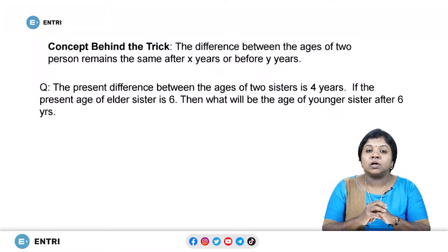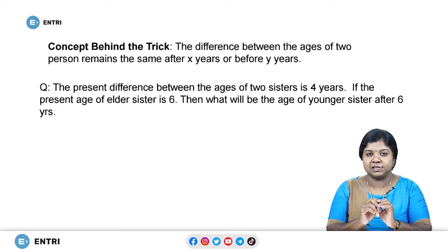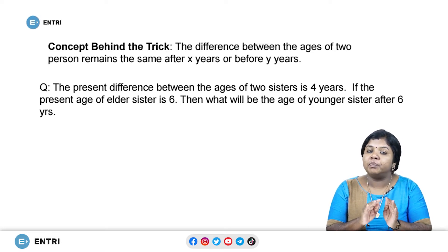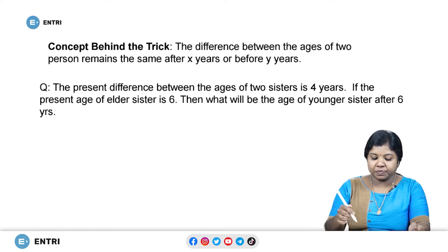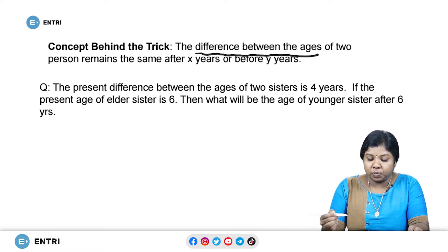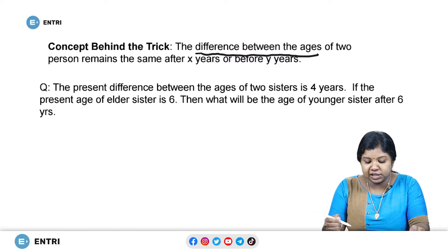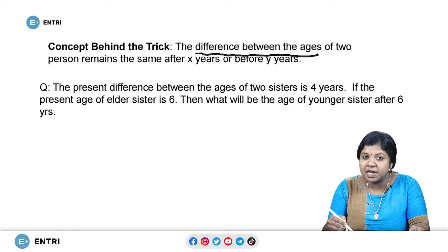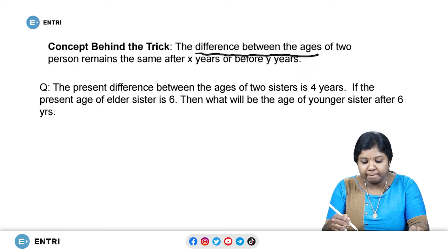Let us begin with the concept on which the short trick works. The difference of the ages between two persons remains the same after or before a period of time. What we need to concentrate on is the difference between the ages. Whenever the question mentions the difference between two persons, keep in mind that the difference will always remain the same irrespective of the past or future time they are mentioning.